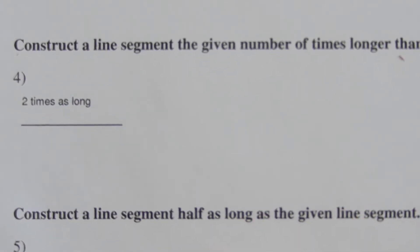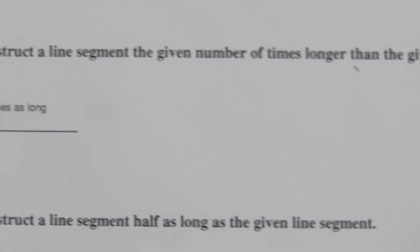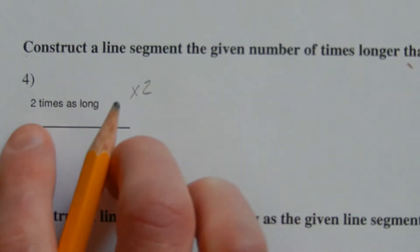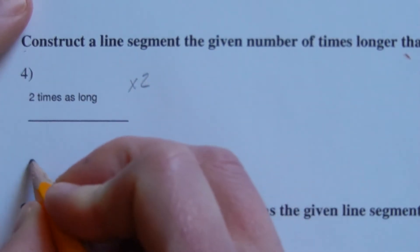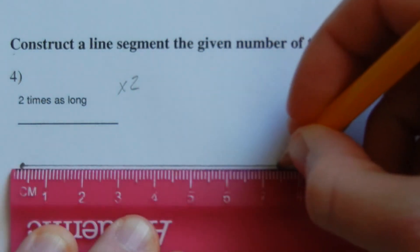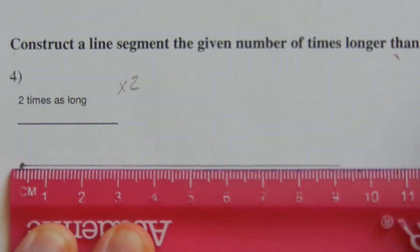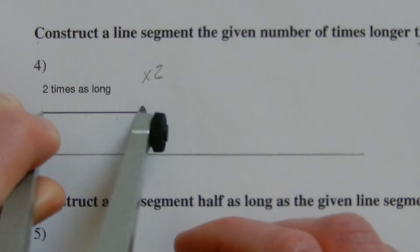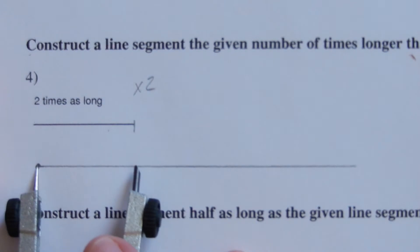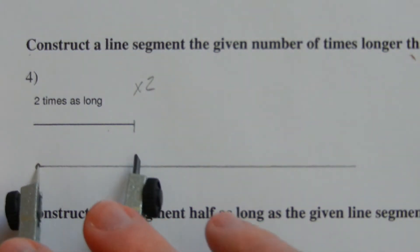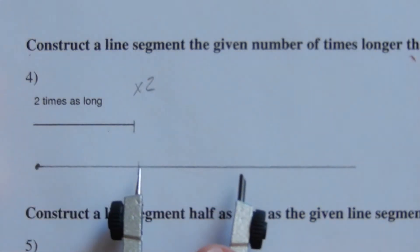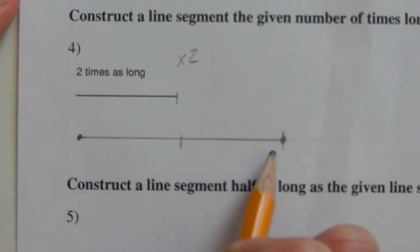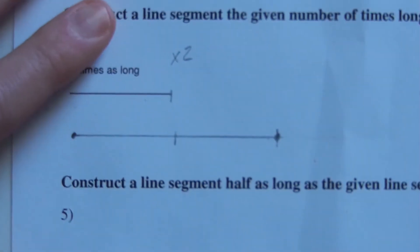Number four: construct a line segment two times as long as the given segment. We're going to take this length and multiply it by two — doubling it. Starting with my point, I draw a straight line extending out roughly past twice the length. I take my compass, place the points on the endpoints of the given line, move the compass to my drawn point, make a mark, and then keeping the same measurement, place it on that mark to find my new endpoint. This segment is two times as long.